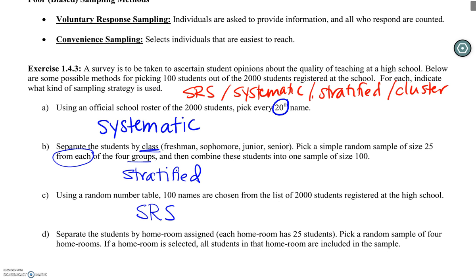And then our last one, again, we're separating students by homeroom. So we have a grouping. But this time you can see we're going to pick a sample of four homerooms. This is the most important thing. The sampling is not the students. It's the rooms or the groups. So this is going to be our cluster. And we have our nice pat on the back of all the students in those groups are then being included in the sample.